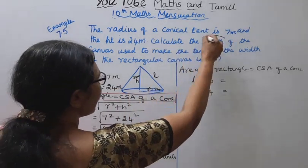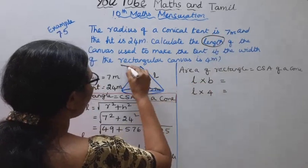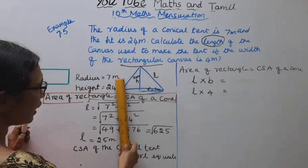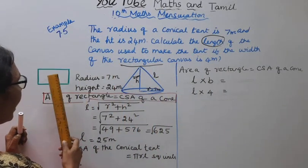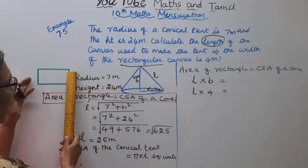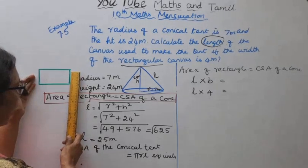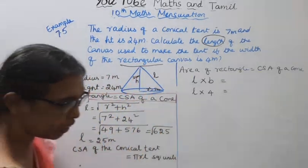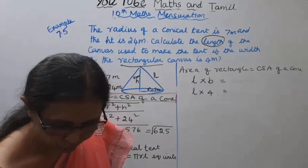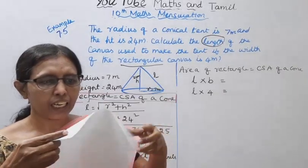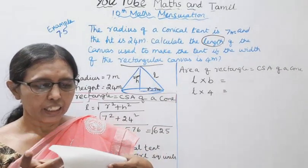Calculate the length of the rectangular canvas. For this conical tent, we use a rectangular canvas. This canvas forms the tent. This is a rectangular cloth.